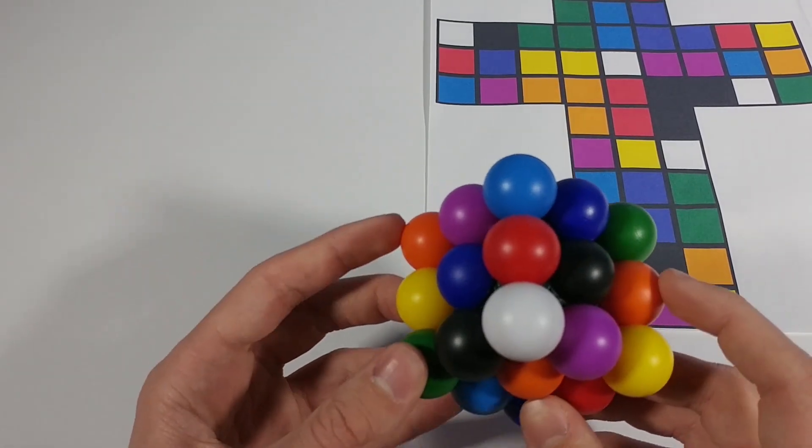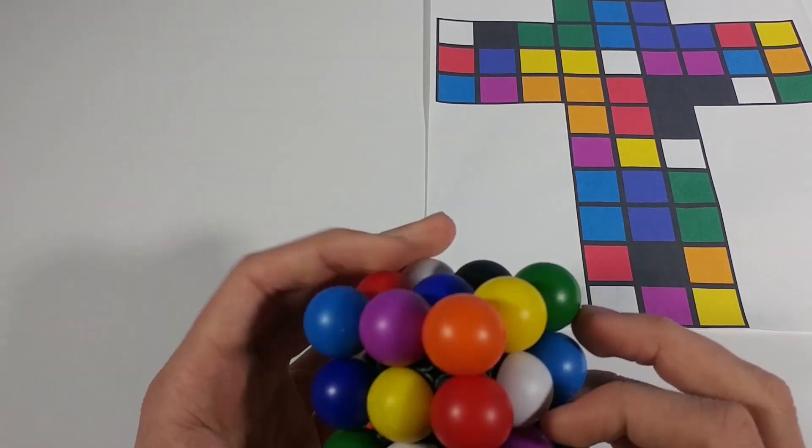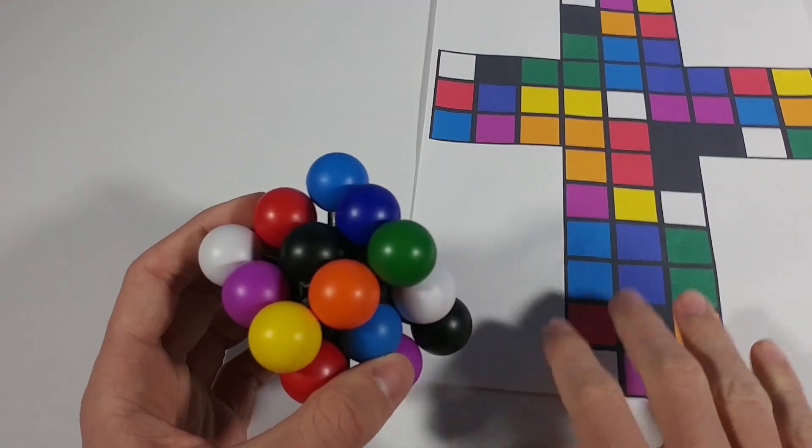So all our corners are fixed and now we should have a completely solved molecule. So, you know, oranges are all in separate layers, reds are all in separate layers. We've got a solved cube and it all worked out.